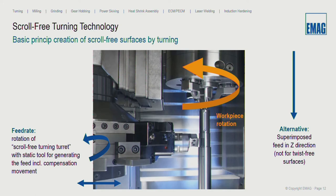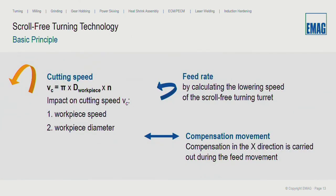With a straight cutting edge, you need a compensation movement with the X axis. The workpiece normally rotates with the turning operation. A superimposed feed in the Z direction is possible, but it's not suitable for twist-free or scroll-free surfaces — when you use the Z movement, you will also get a scroll on the surface. Only with the rotation of the turret is the scroll free process possible.